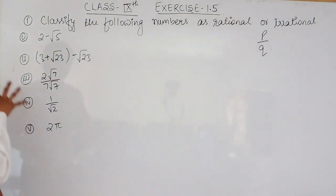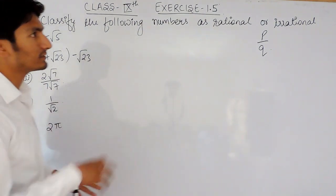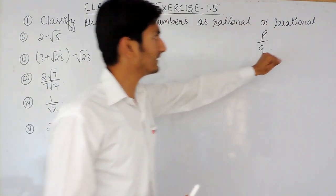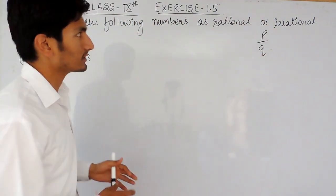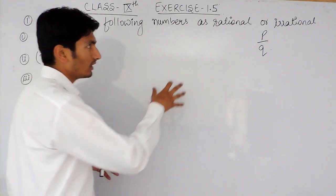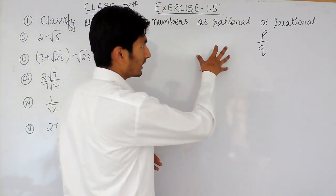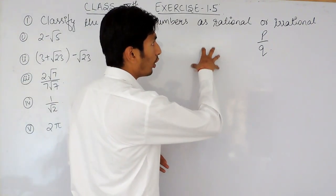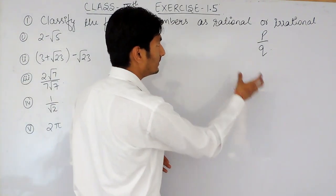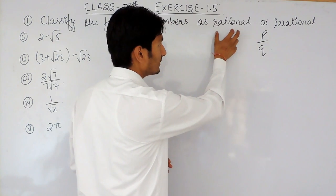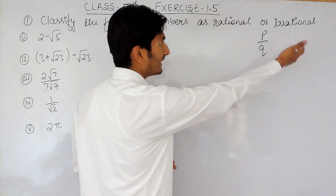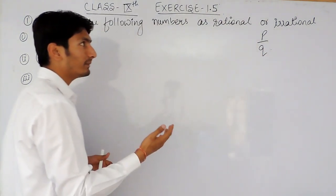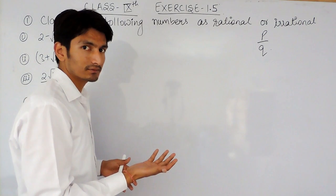There are certain properties between rational and irrational numbers. The first is: if you subtract or add a rational number with an irrational number, the result will be an irrational number.